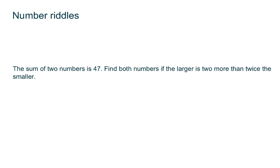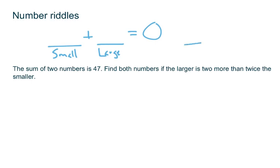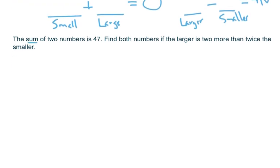The first problem: the sum of two numbers is 47. Find both numbers if the larger is 2 more than twice the smaller. The structure for these number riddles is we're going to have two numbers added together — one is the smaller, one is the larger — and they equal something. There's also a variation where we have a difference. If we're doing a difference of two numbers and we have a positive number, we have to remember it's the larger minus the smaller. That's the only way you get a positive result. So I'm going to set up the equation: one number plus another number equals 47.